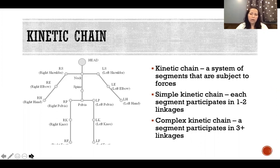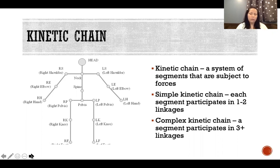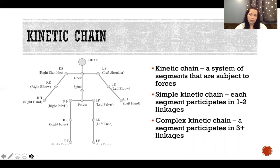A simple kinetic chain is when every segment in the chain only has one or two linkages. Looking at the upper extremity — hand, elbow, shoulder — that's a simple kinetic chain because each one only articulates with one or two other segments. Compared to adding the neck or the lower extremity all the way to the pelvis: the pelvis has three linkages — right femur, left femur, and up to the spine — so that's a complex kinetic chain. The entire body is a complex kinetic chain because some segments participate in three or more linkages.